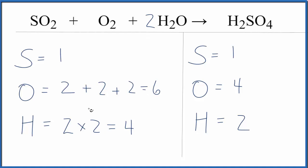Let's fix the hydrogen atoms. So we have 4 here and 2 here. If we put a 2 in front of the H2SO4, now 2 times 2, that gives us 4.